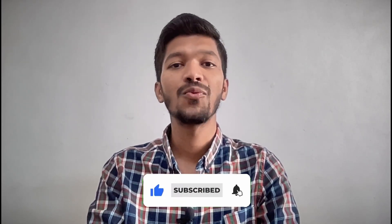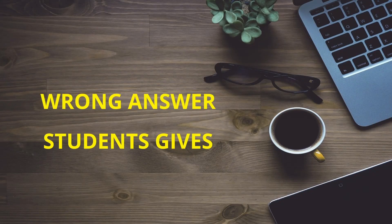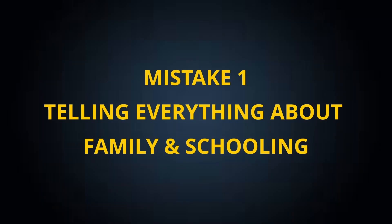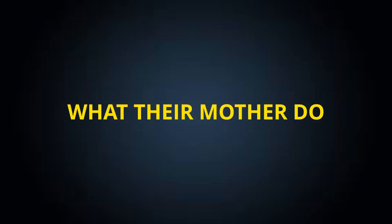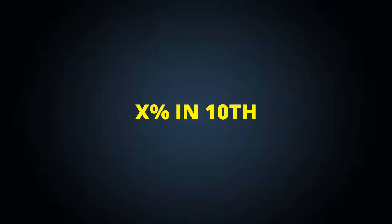Now let's check out what is the wrong way mainly students give this answer. Looking at the wrong answers of students, there are certain mistakes students mainly make. Mistake number one: telling everything about your family and schooling. While answering this question, most students tell everything about their schooling and family — like what their father does, what their mother does, X percentage in 10th, Y percentage in 12th.